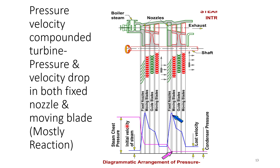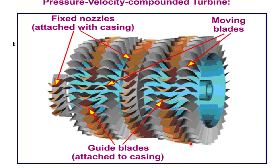Almost all stages of the turbine except the first are pressure-velocity compounded. As steam passes through each nozzle, pressure drops and velocity increases. In the moving blade and fixed blade, velocity drops and pressure changes accordingly. The practical turbine uses pressure-and-velocity compounding where there is a series of nozzles and moving blades alternating: nozzle, moving blade, nozzle, moving blade — repeated stage after stage.